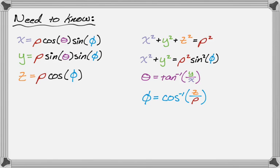We need to know that x is rho cosine theta sine phi, y is rho sine theta sine phi, and z is equal to rho cosine phi. So those are kind of the basic equations that you need to know.